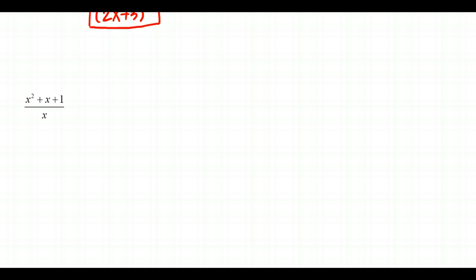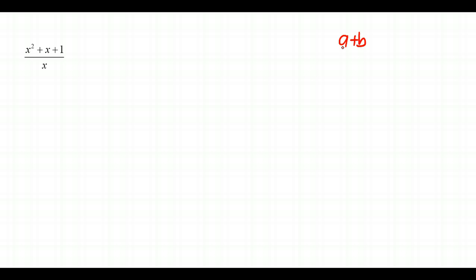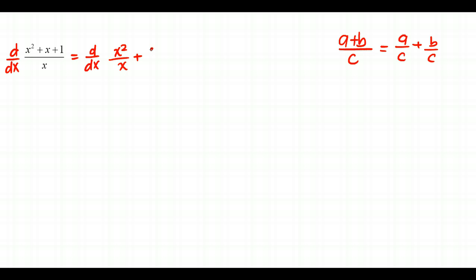Another example where we can avoid the quotient rule: if you have (a + b)/c — multiple terms in the numerator over a single term — you can split it into a/c + b/c. So for a function like (x² + x + 1)/x, split it into x²/x + x/x + 1/x.